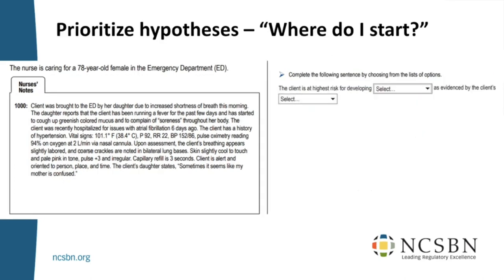For the prioritize-hypotheses item: same client. 'The client is at highest risk for developing [what], as evidenced by the client's [something].' We need a key and distractors for the pull-down menu. Participants suggested sepsis and pneumonia as what the client is at highest risk for developing. There's some disagreement here — different groups give different answers — so don't be afraid to type in your idea.